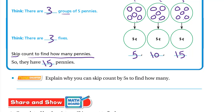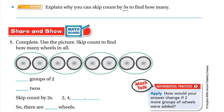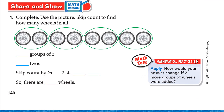Why can you skip count by fives to find how many? Because each group has the same number — five. We can skip count by fives because all groups are equal. If the groups didn't all have the same number, we couldn't skip count.